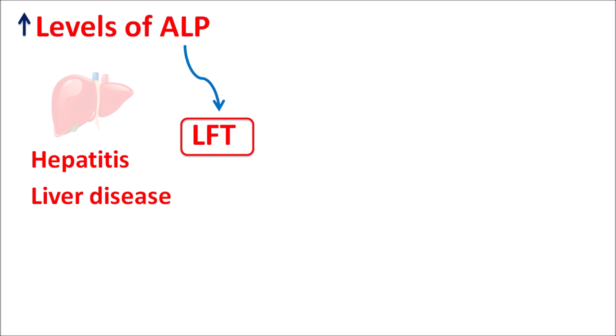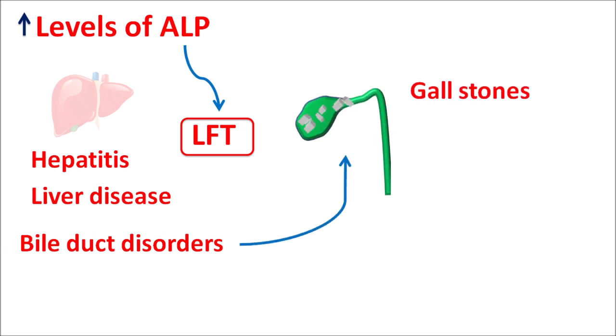Particularly, ALP is elevated in bile duct disorders — for instance, formation of gallstones, cancer of the gallbladder, or cholecystitis (inflammation of the gallbladder). All these conditions may result in elevation of ALP because ALP secretion is reduced while synthesis is increased, resulting in elevated levels of ALP within the serum.